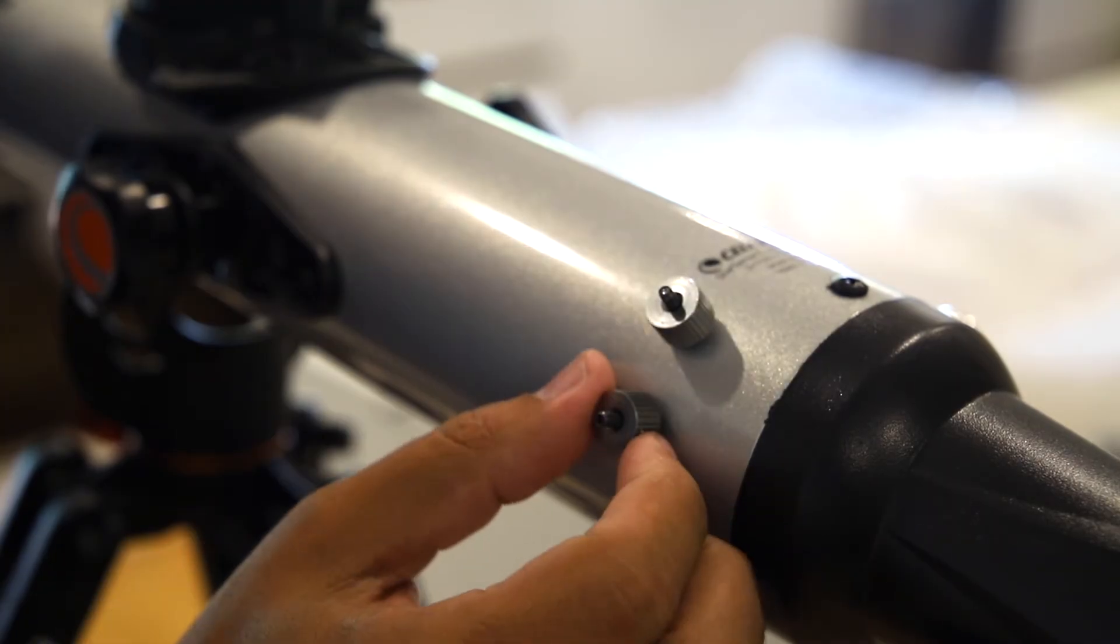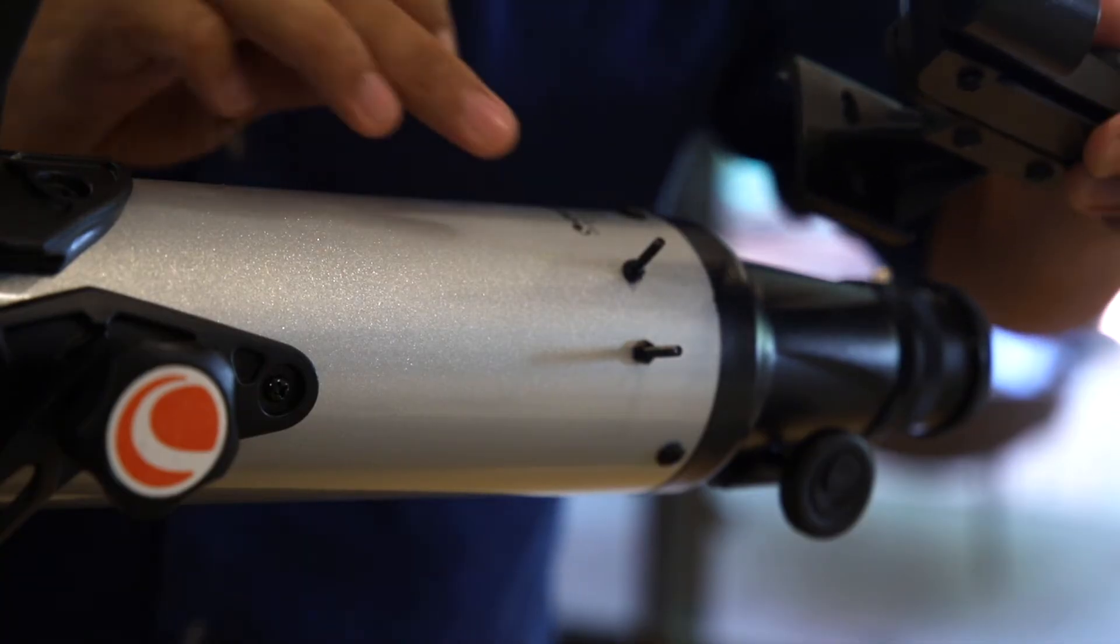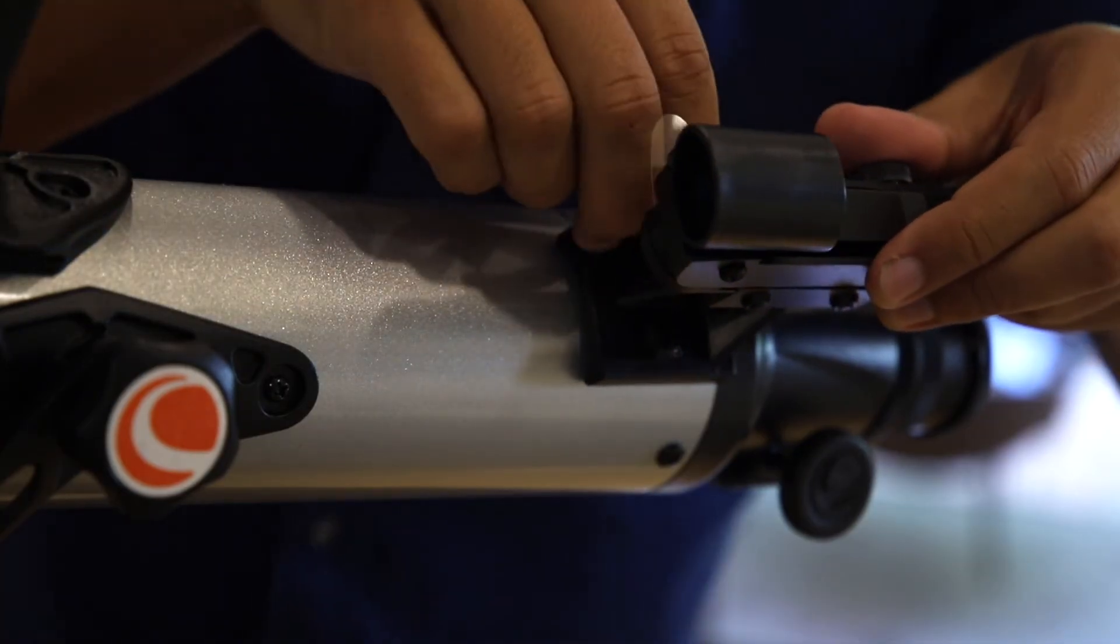Loosen off the nuts for the red dot finder scope. Slide the red dot finder scope on and tighten those nuts.